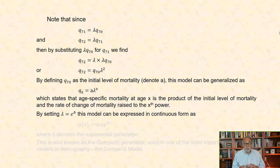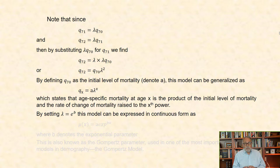By setting lambda equal to e to the b, this model can be expressed in continuous form as what is known as the Gompertz model. This is one of the most important mortality models in demography.